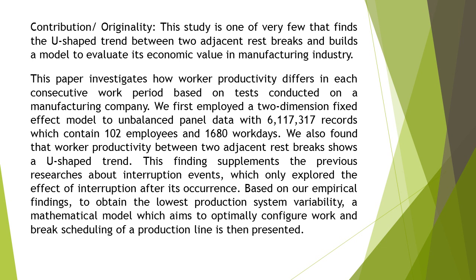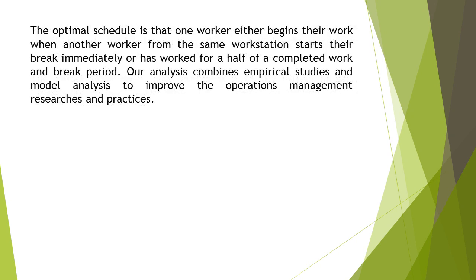Based on our empirical findings, to obtain the lowest production system variability, a mathematical model which aims to optimally configure work-and-break scheduling of a production line is then presented. The optimal schedule is that one worker either begins their work when another worker from the same workstation starts their break immediately, or has worked for half of a completed work-and-break period.